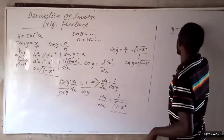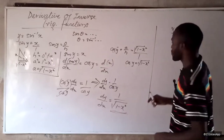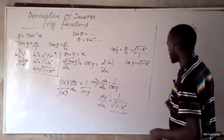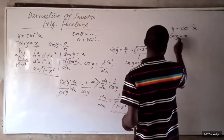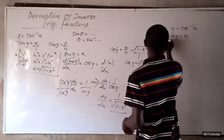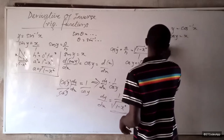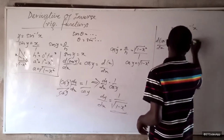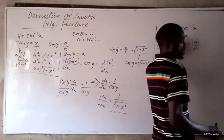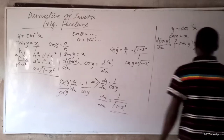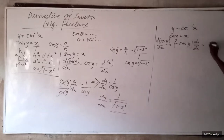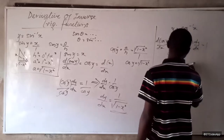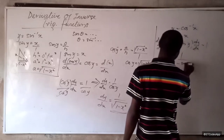Let me prove the derivative of cos inverse of x. Using the same principle, y is the angle, so we have cos y equal to x. If we then take the derivative of cos y, we get minus sine y times dy/dx, and that equals 1 — the derivative of x. So dy/dx is equal to 1 over negative sine y.